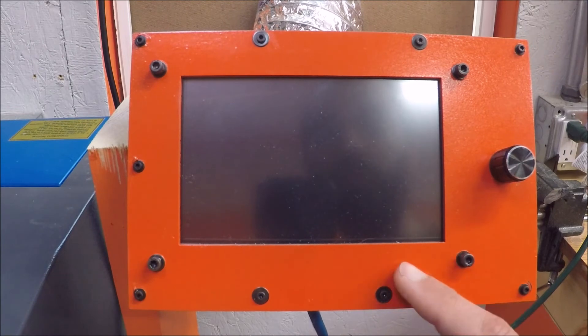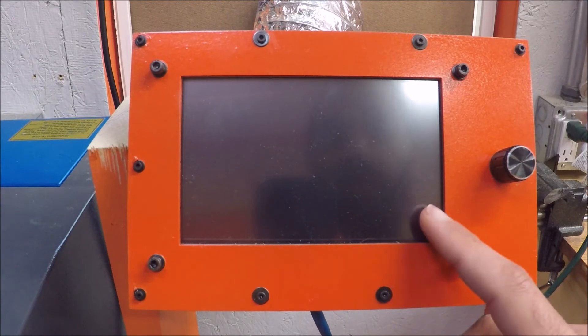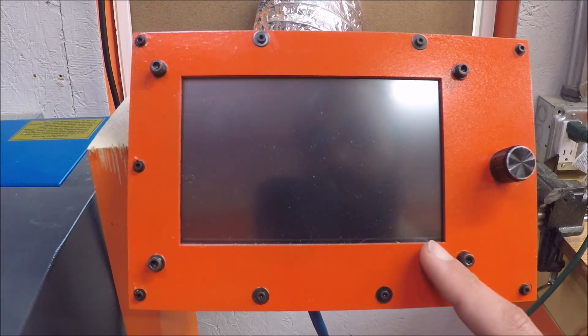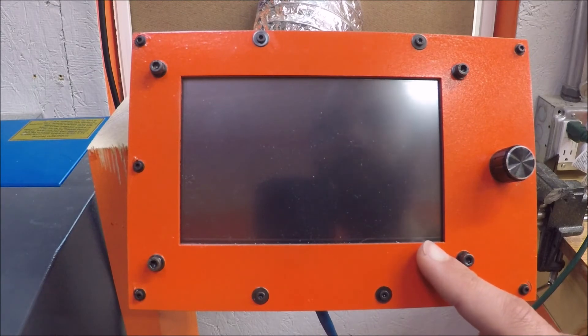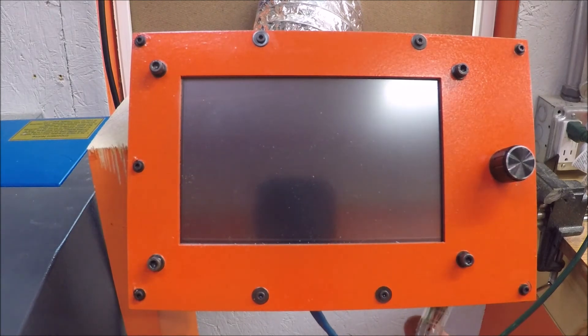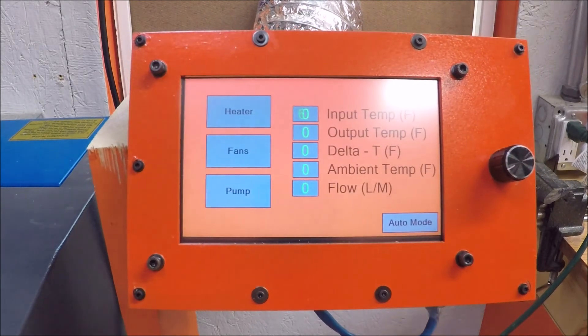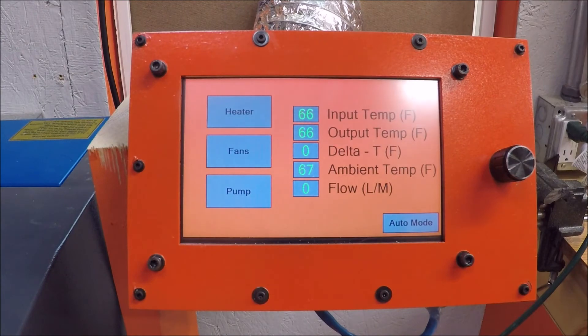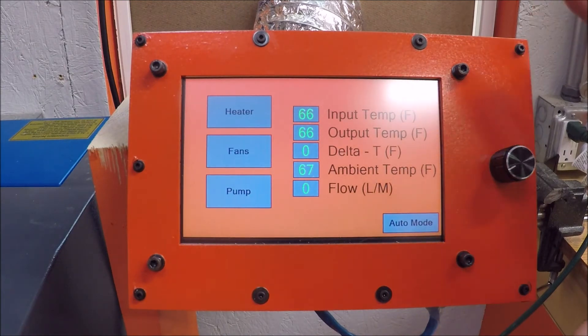There is a little buck converter that knocks the 12 volts down to 5 volts. I did that because this Nextion display actually uses a decent amount of power and the built-in power regulator on the Arduino Nano cannot keep up with it. So that's why I designed it this way. And if you plug it back in, the system starts back up. So that's basically the brains behind the system.